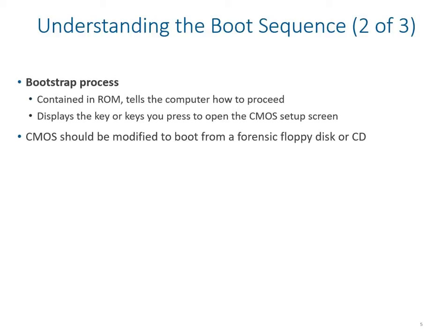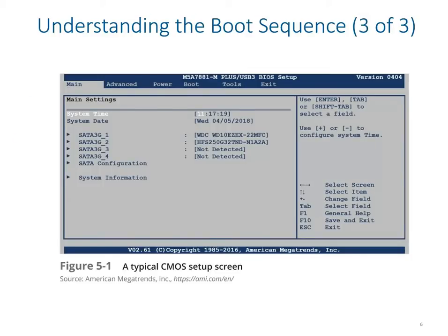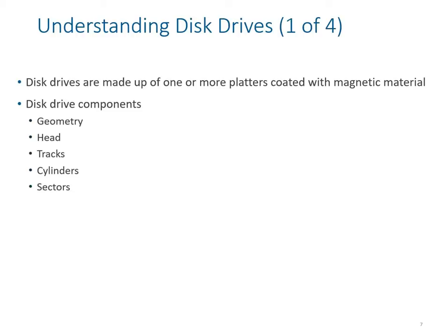Whenever we are installing an operating system on a machine, we change the boot sequence in the BIOS, choosing the startup device as USB, internal hard disk, floppy disk, or CD-ROM. In the BIOS screen shown, you can see options like date and time, and the first connected device being a Western Digital hard disk on SATA 3G, followed by other connected devices.